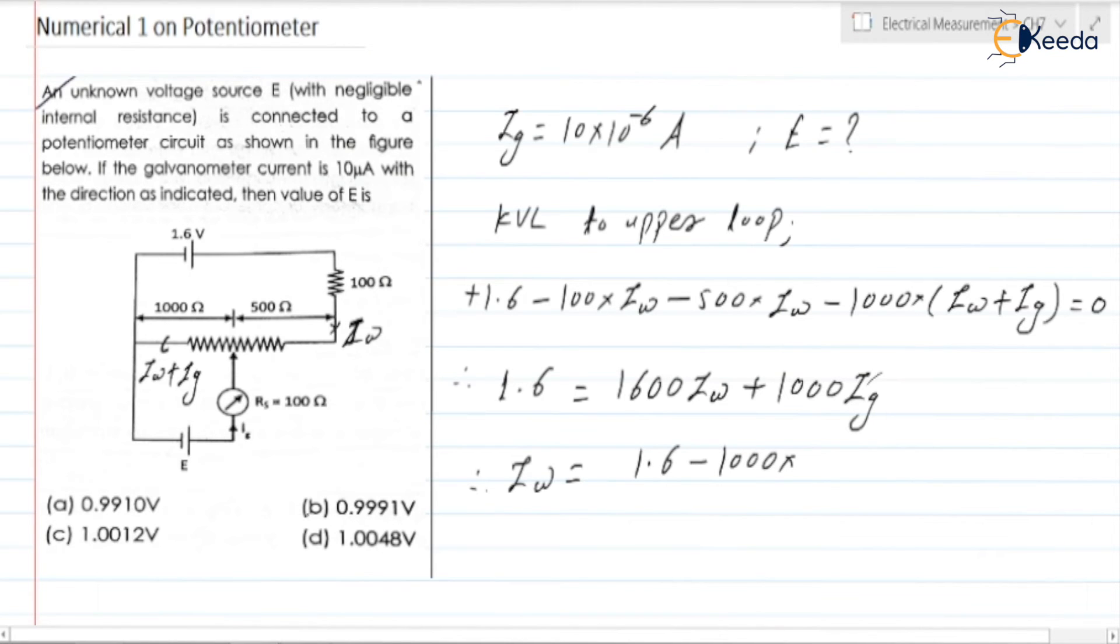What is Ig? Ig is given, it is 10 microampere, 10 into 10 to the power minus 6, divided by 1600. So if you check it is equal to 9.9375 into 10 to the power minus 4.